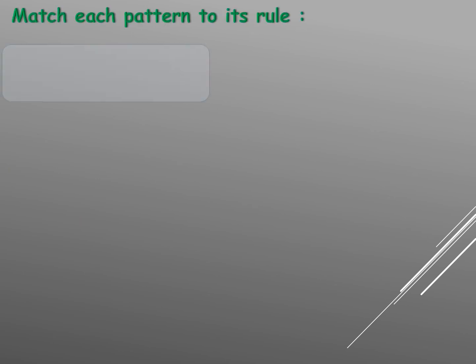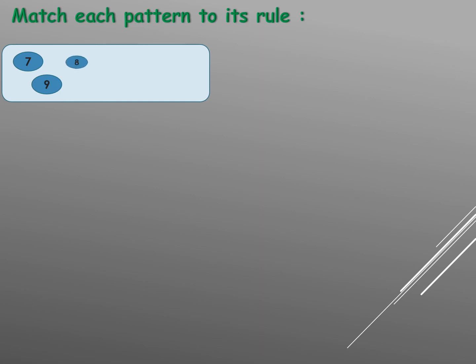Match each pattern to its rule. Look: seven, nine — seven plus two equals nine. Then nine minus one equals eight. Eight plus two equals ten. The rule is plus two, minus one.